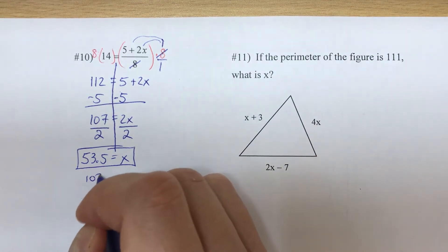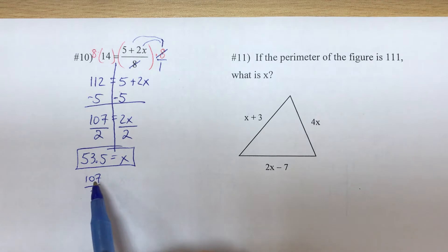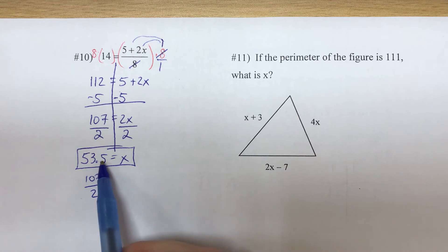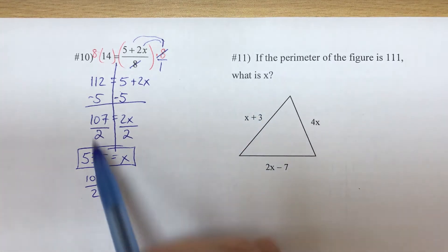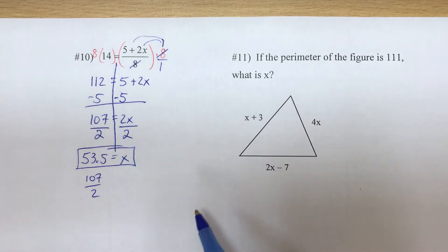You could write a fraction if you wanted, you could leave it as 107 over two, but I like 53.5. The only times that I'm going to leave a fraction answer is if this is a decimal that's either repeating or if it really has a long pattern to it. All right, number 11, and you can check, you should check that, but I'm going to tell you that is the correct answer.